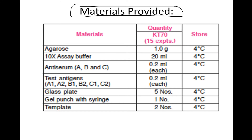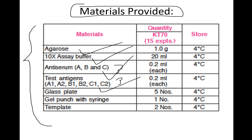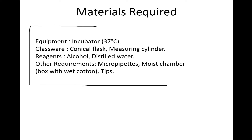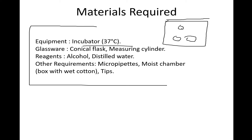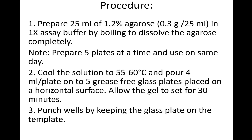The materials required include agarose gel, buffer, antiserum, three sets of antigens, three antiserums, a glass plate, a gel puncher for punching wells, and a template. Additional materials include an incubator set at 37 degrees, conical flasks, measuring cylinders, alcohol, distilled water, micropipettes, and a moist chamber.